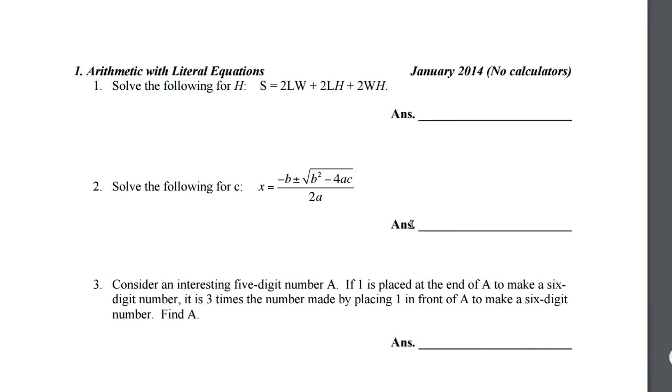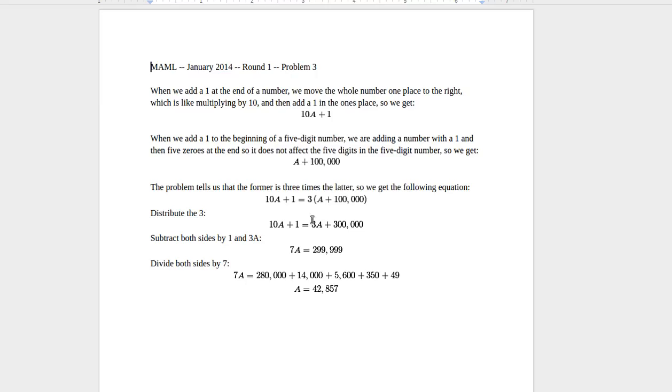So this problem tells us that the former is 3 times the latter. So it's 10A plus 1 equals 3 times A plus 100,000. Distribute the 3. 10A plus 1 equals 3A plus 300,000. Subtract both sides by 1, so you get 299,999, and subtract both sides by 3A, so you get 7A. Divide both sides by 7, and you can do this using long division or whatever method you want, and you get 42,857.